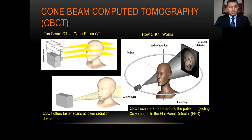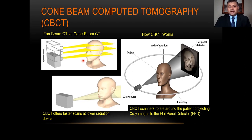Let's quickly review the difference between fan beam CT — the type used in hospital CT, medical CT, or multi-detector CT — where the beam shape is like a thin, flat fan that has to spiral around the patient's head multiple times to image the maxillofacial area. Cone beam CT, just like the name says, has an X-ray beam shaped like a cone. It can cover a much larger surface area, and one quick spin around the patient's head captures the maxillofacial and mandibular area. Advantages include quicker scanning at much lower radiation dose compared to hospital CT.